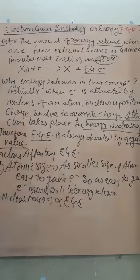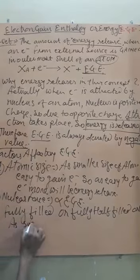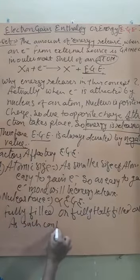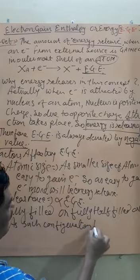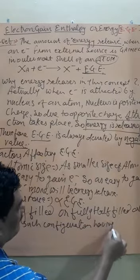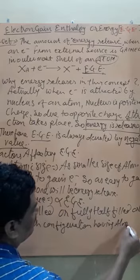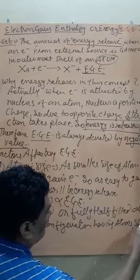The second factor is nuclear attraction force, which is directly proportional to electron gain enthalpy. As the nuclear attraction force is stronger, it is easier to gain the electron, because the nucleus is attracting the electron. So if the nuclear attraction force is high, the electron gain enthalpy will also be very high — with a negative sign.